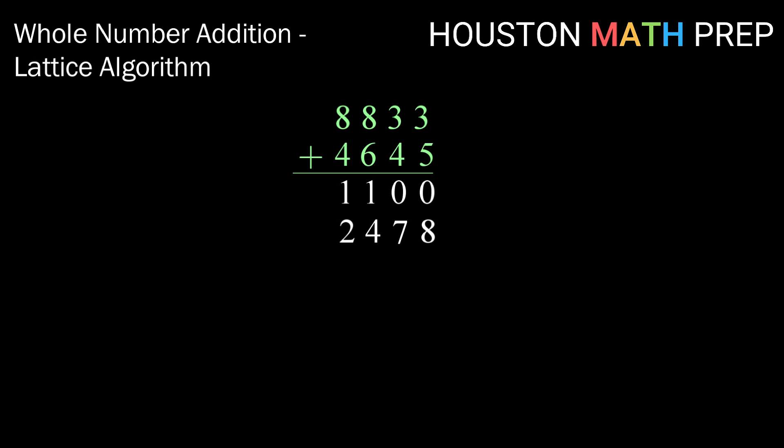Alright, get those diagonals going. And now, notice at the top we have a 1, so we need to make sure that we actually bring that down this time. So our top diagonal gives us a 1. Then 1 plus 2 gives us 3. Then 0 plus 4 gives us 4. Then 0 plus 7 gives us 7. And finally, we get 8. So our sum for 8,833 plus 4,645 is 13,478.